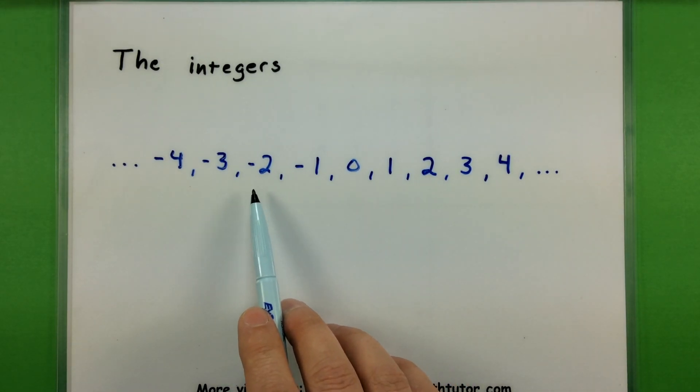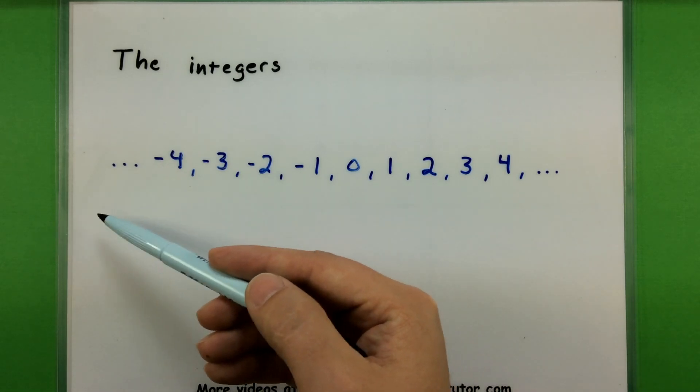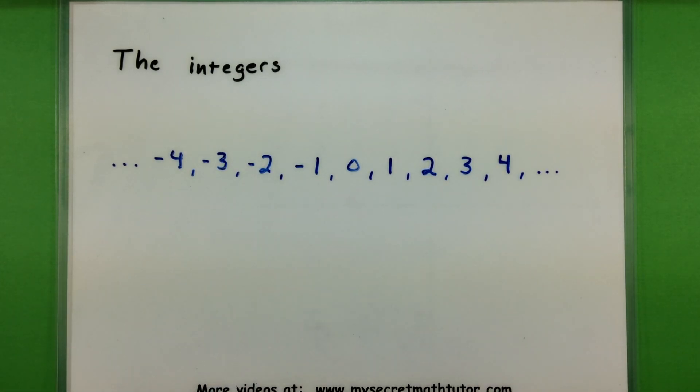So you'll see stuff like negative 1, negative 2, negative 3, negative 4, and all the way down the line this way, much further into like negative 5, negative 6, and all the way down as far as you can go.